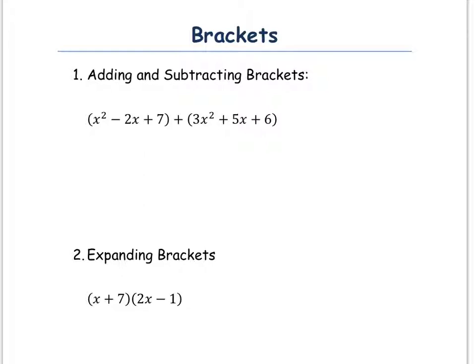So x squared plus 3x squared is 4x squared, minus 2x plus 5x is 3x, and 7 plus 6 is 13. So that's part one.